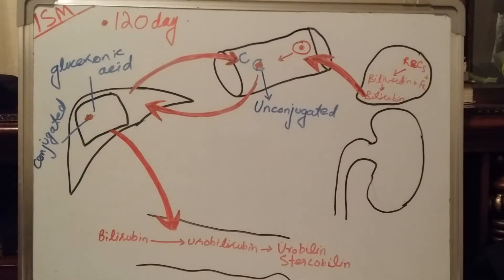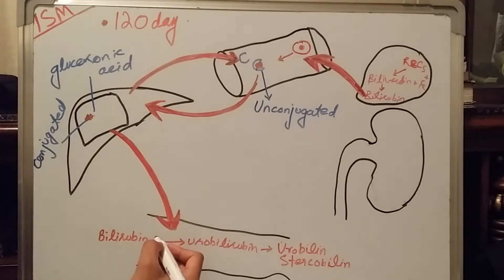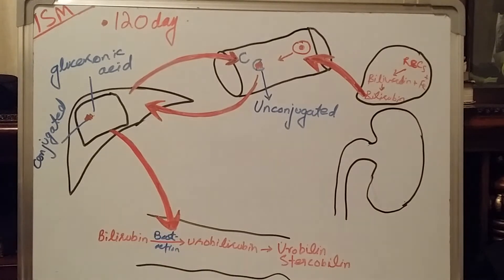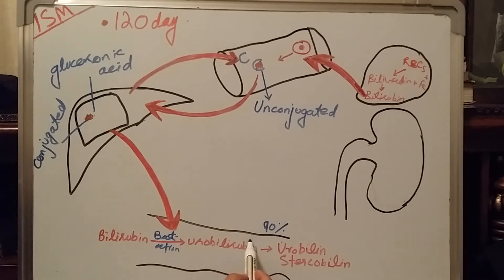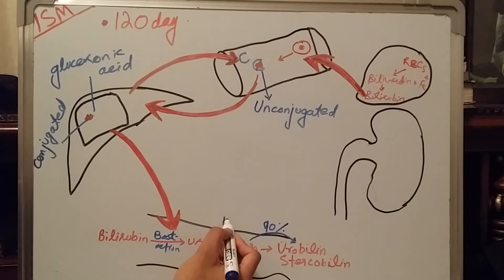This conversion from bilirubin to urobilinogen is carried out by bacterial action whenever it reaches the duodenum. This urobilinogen is further converted into another substance known as urobilin-stercobilin. Approximately 90% of the urobilinogen is converted into urobilin-stercobilin.